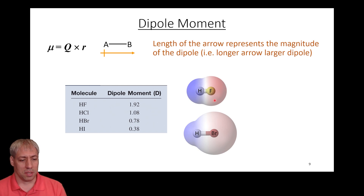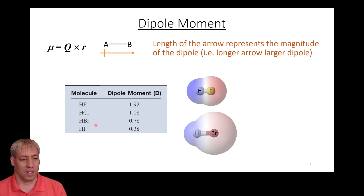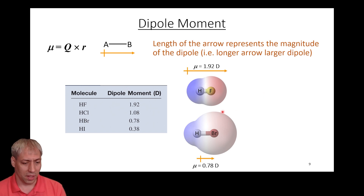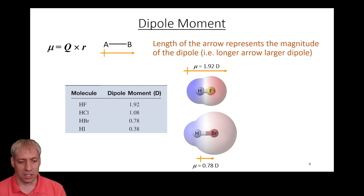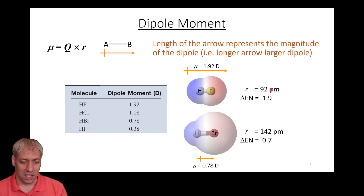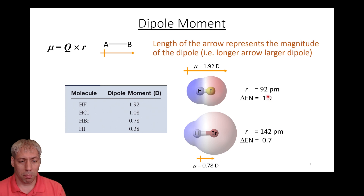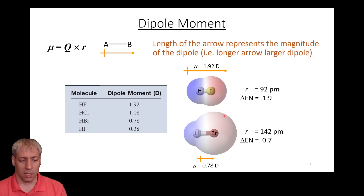Looking at our simplest molecules — HF, HBr, and H₂ — H₂ doesn't have a dipole moment; it's nonpolar. But the rest have an electronegativity difference, so each has a direction and magnitude. HBr has a dipole moment of 0.78 Debye, while HF has a dipole moment of 1.92 Debye. Despite the H-F bond being shorter (92 pm versus 142 pm for HBr), it has a larger dipole moment because the electronegativity difference is 1.9 versus 0.7. HF is a more polar molecule.